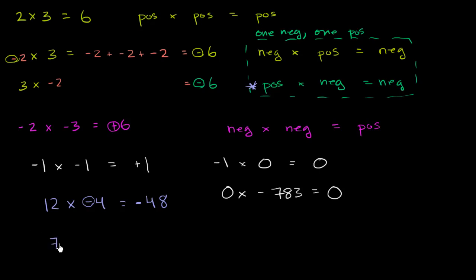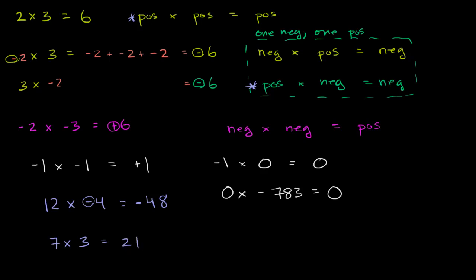What is 7 times 3? Well, this is a bit of a trick — there are no negative numbers here. This is just positive 7 times positive 3, the first circumstance, which you already knew how to do before this video. This would just be equal to 21.